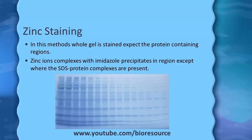In zinc staining, the whole gel is stained except the protein-containing regions. The zinc ions complex with imidazole and precipitate in all regions except where the SDS-protein complexes are present. Where the protein is present, staining does not occur. The whole gel turns a whitish color, and the gel can be visualized by placing it on a black background.